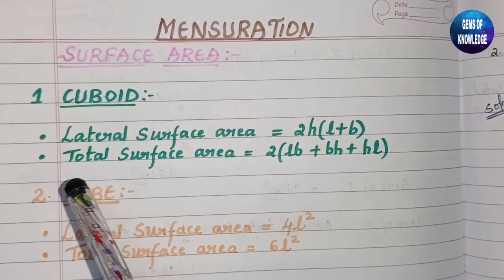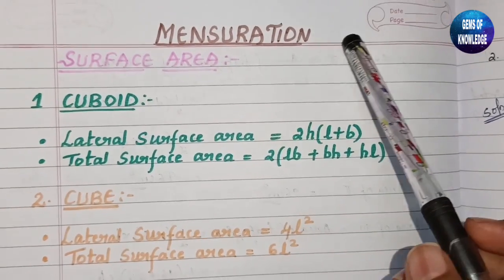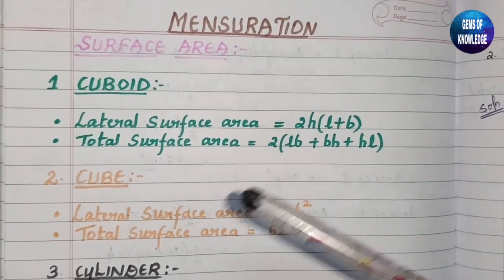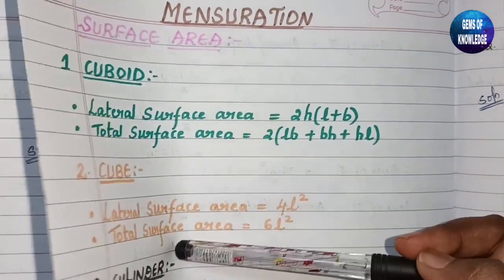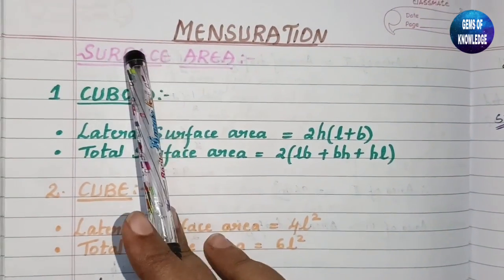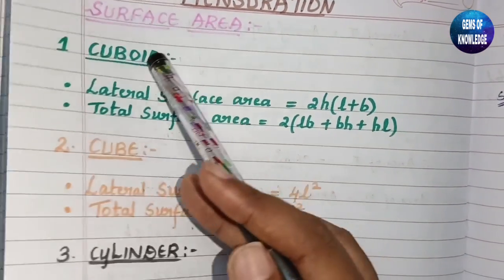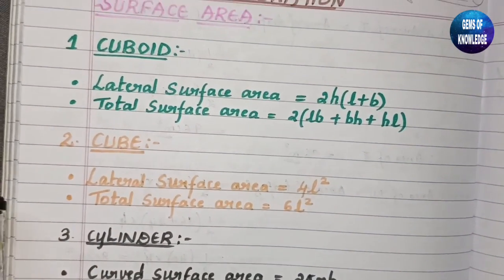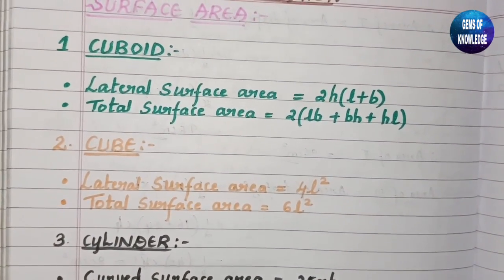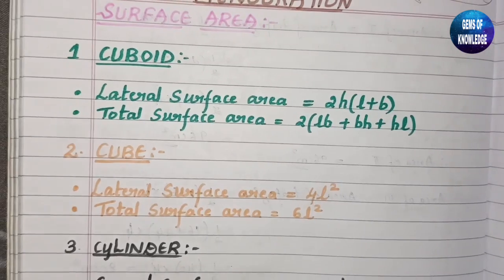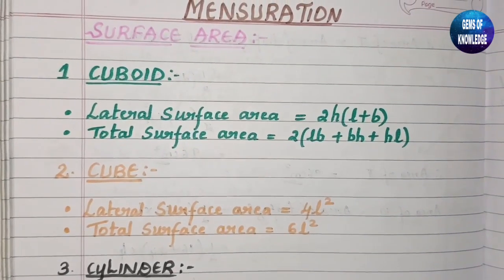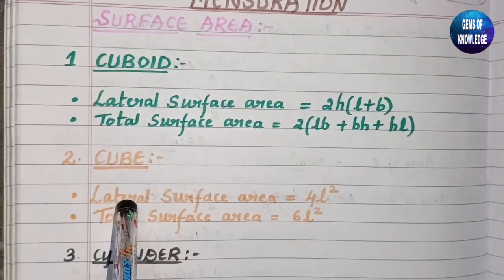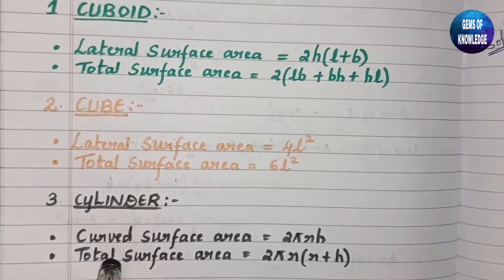Hello everyone, welcome back to my channel Gems of Knowledge. I am here with another exercise, that is Exercise 9.3. Before dealing with the exercise, we need to know some formulas related to that. Before starting, make sure to subscribe to my channel and click on the bell button to get notifications. Here you can see two formulas regarding cuboid, two regarding cube, and two regarding cylinder.